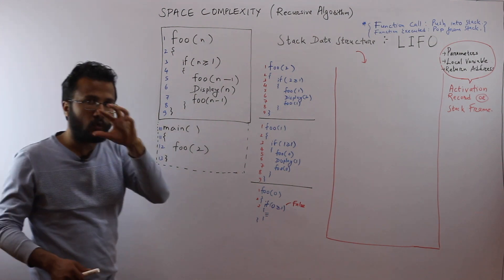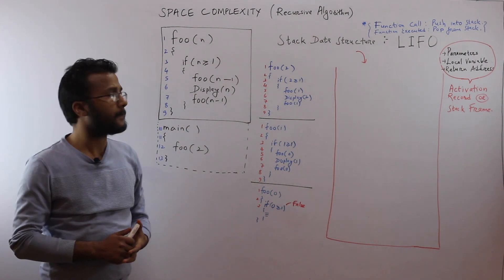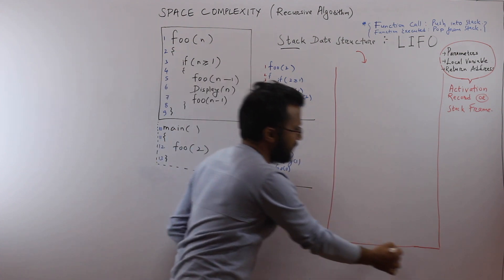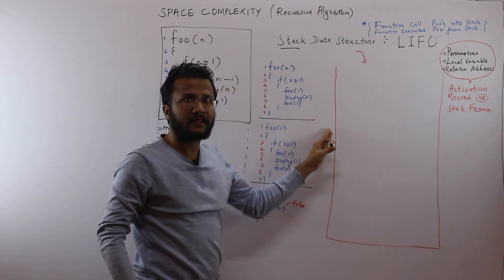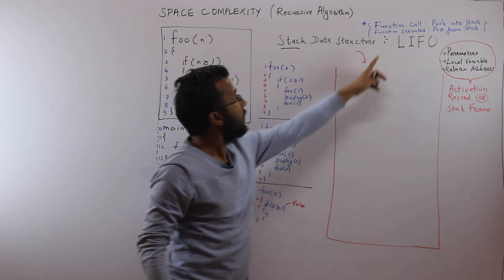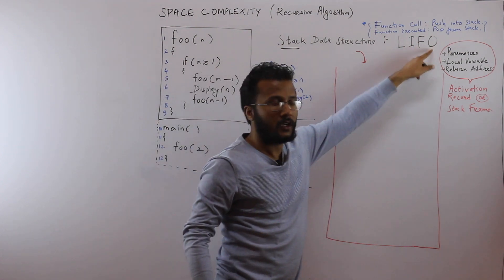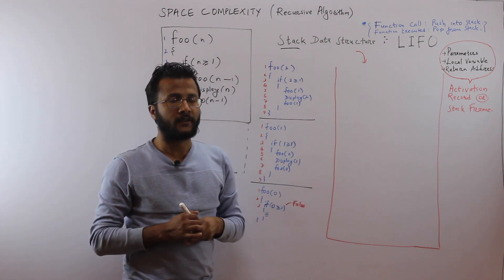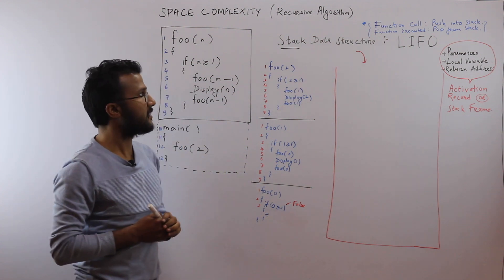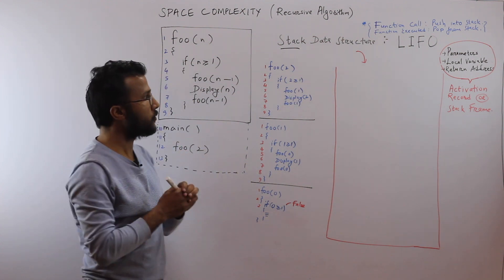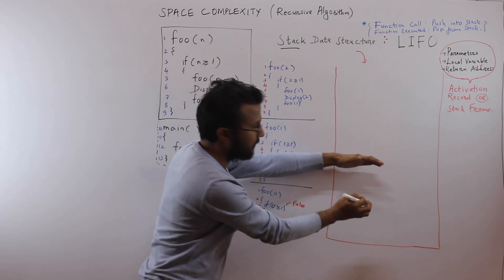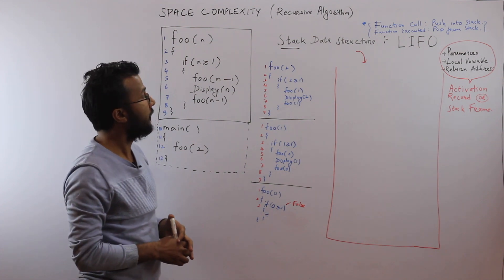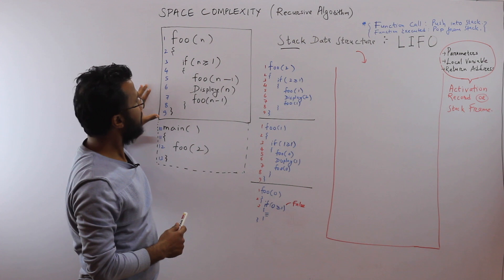Remember this: whenever recursion happens, it uses a data structure called the stack. The stack works on the principle of last-in-first-out — whatever item is inserted last is the first one to be popped out. There are two operations in the stack: push, to enter something, and pop, to remove an item.